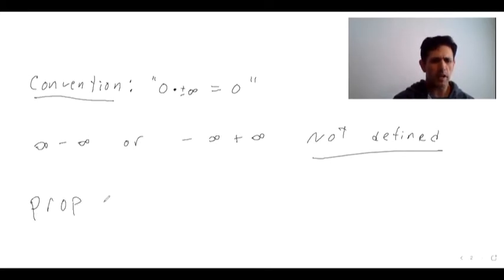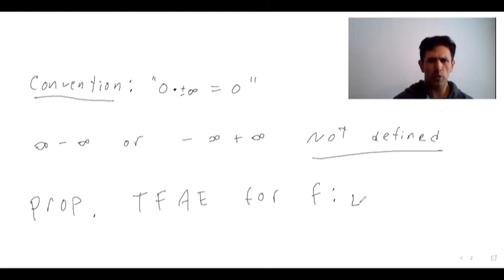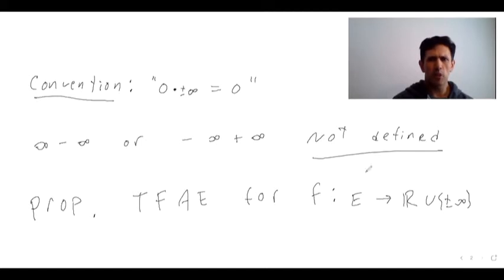So let's dive into the definition of a measurable function. The following is a proposition giving four equivalent conditions. I'm going to differ a little from Royden — I'll be a little more efficient. First, assume throughout that E is measurable, since it doesn't make sense to discuss f being measurable if the domain is not measurable. Condition one: for any real number c, the inverse image of the interval (c, ∞) is measurable. Condition two: for any c in ℝ, the inverse image of [c, ∞) — including c and infinity — is measurable.